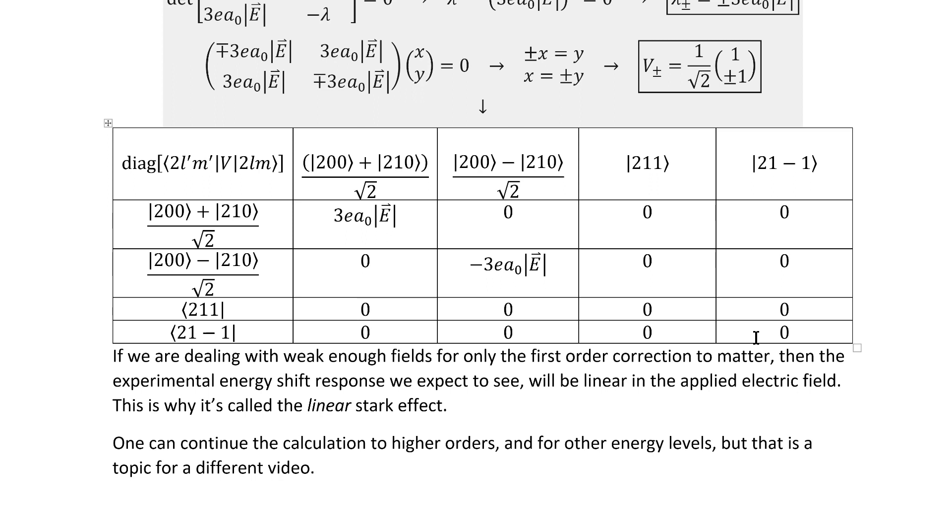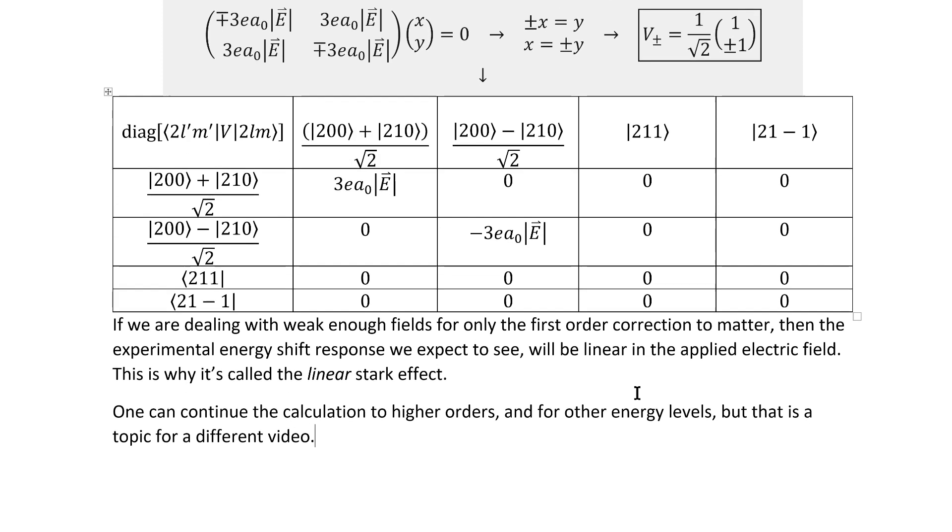At this point, we can more clearly see why it's called the linear Stark effect, at least at the theoretical level. If we're dealing with weak enough fields for only this first-order correction to matter, then the experimental energy shift is in fact linear in the applied electric field strength.